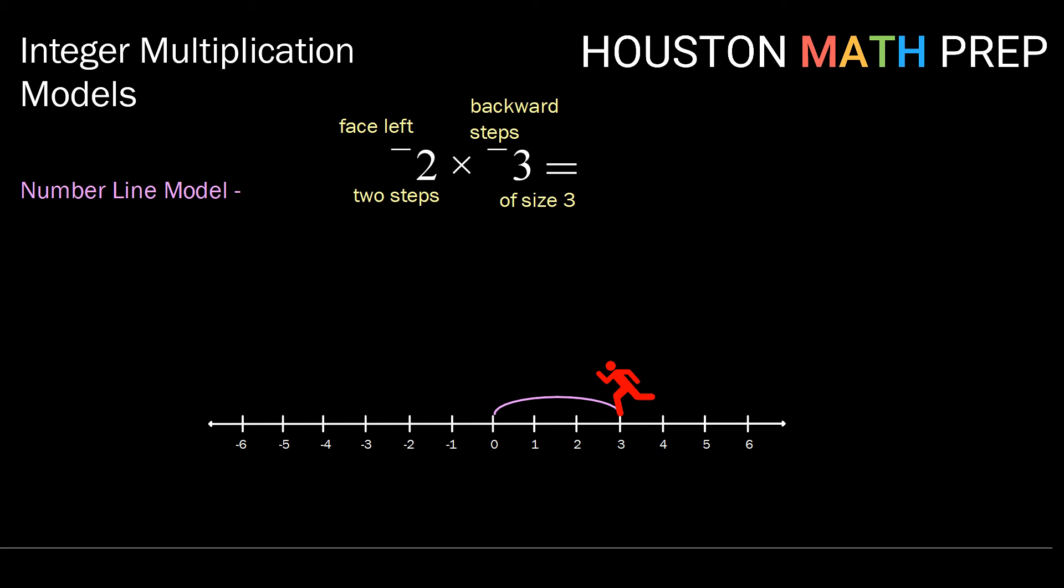Here's our first backward step of size 3, and here's our second backward step of size 3. Once we've completed our two backward steps of size 3, we end up at 6. So negative 2 times negative 3 is 6.